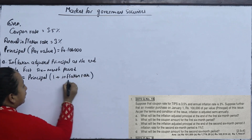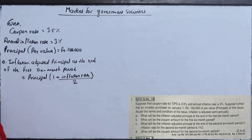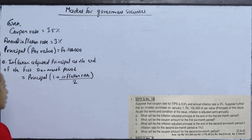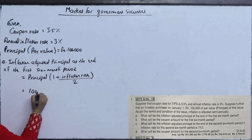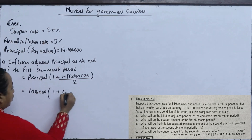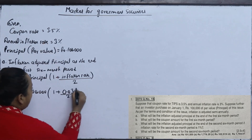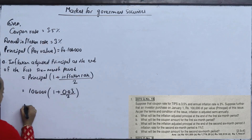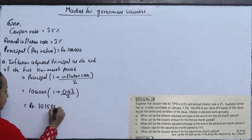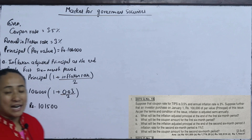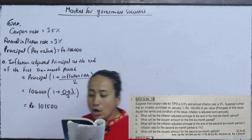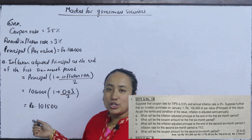The formula is: Principal × (1 + inflation rate / 2), since it is a 6-month period. That means the principal is 1 lakh × (1 + 0.03 / 2), which gives us 1,01,500. So inflation-adjusted principal is 1,01,500.